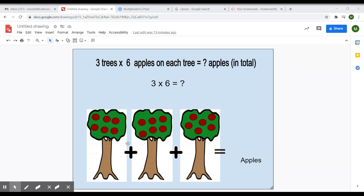We're going to add all the apples together. So one, two, three, four, five, six, seven, eight, nine, 10, 11, 12, 13, 14, 15, 16, 17, 18. So in total, we have 18 apples.